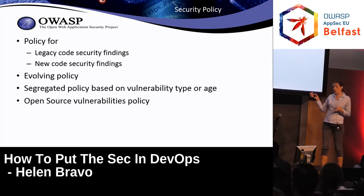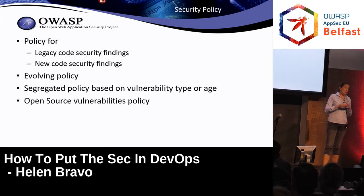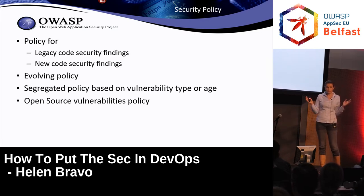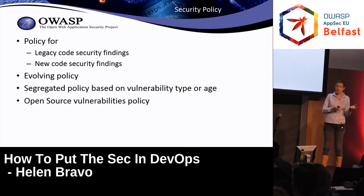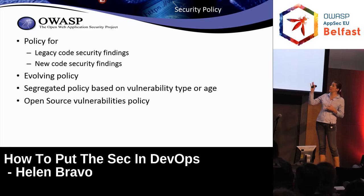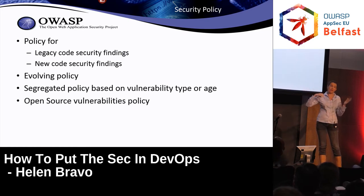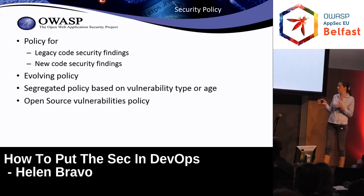Another approach is an evolving policy: start small and add more and more checks as you go. Start from the most important checkers and then expand. You can combine both the backlog/new division and the most important versus less important prioritization.